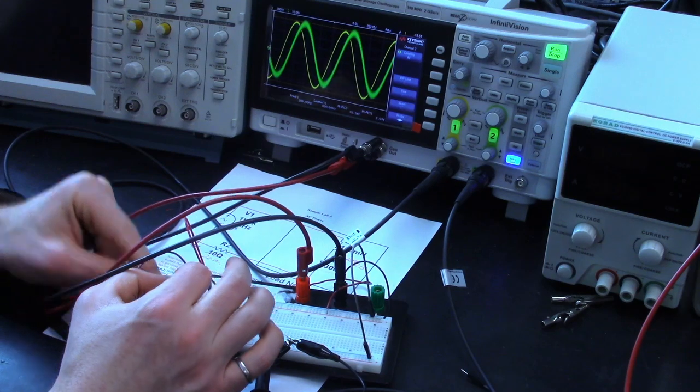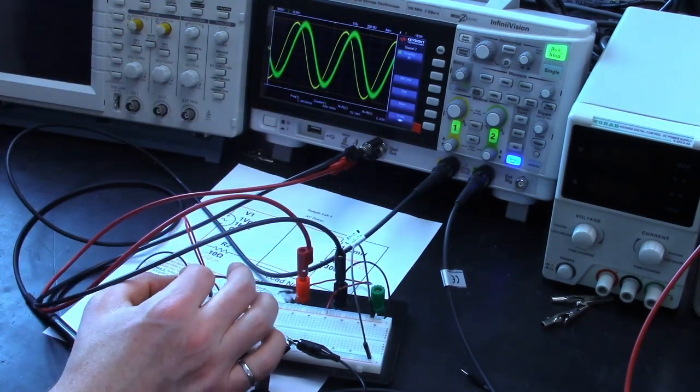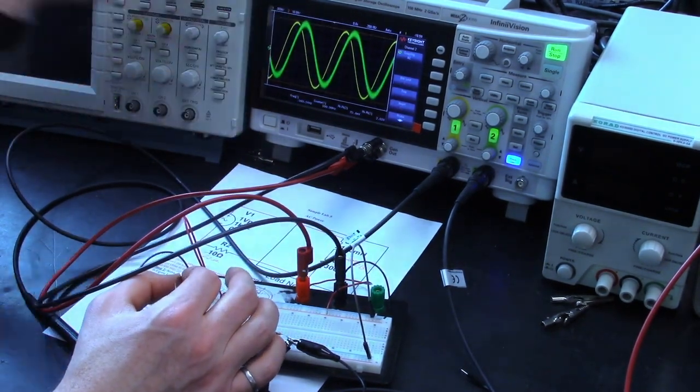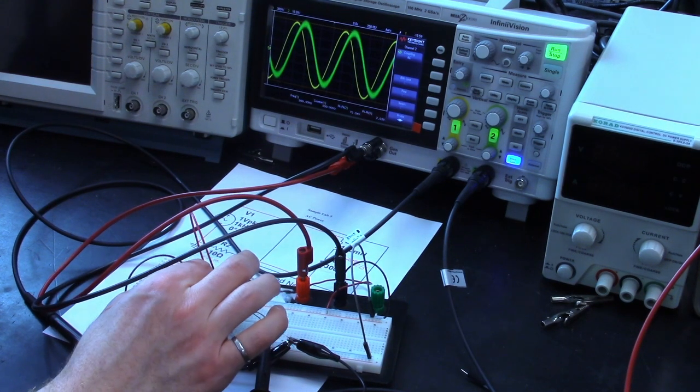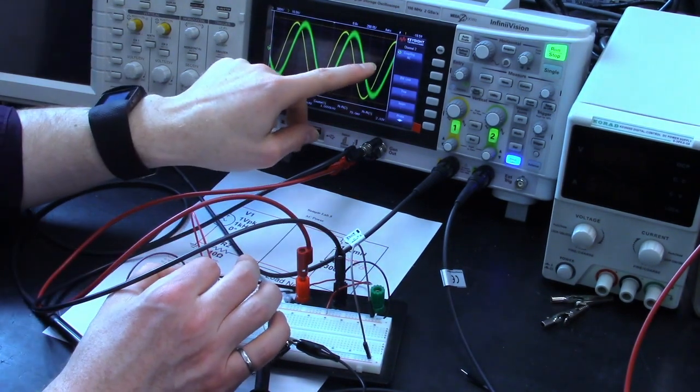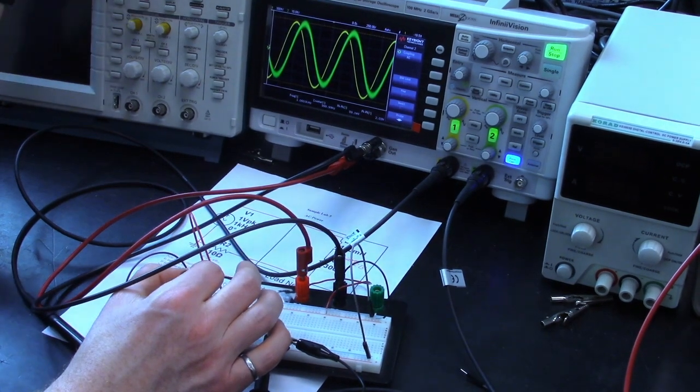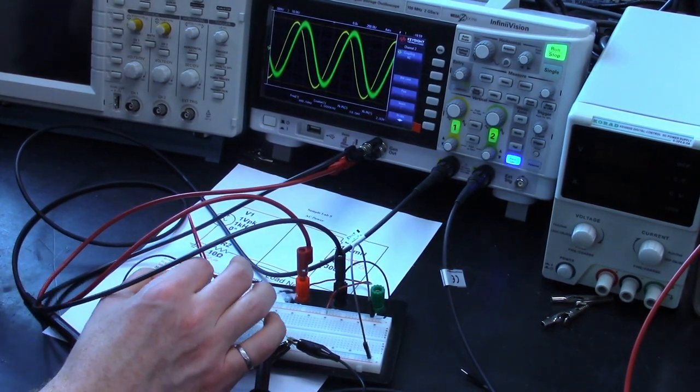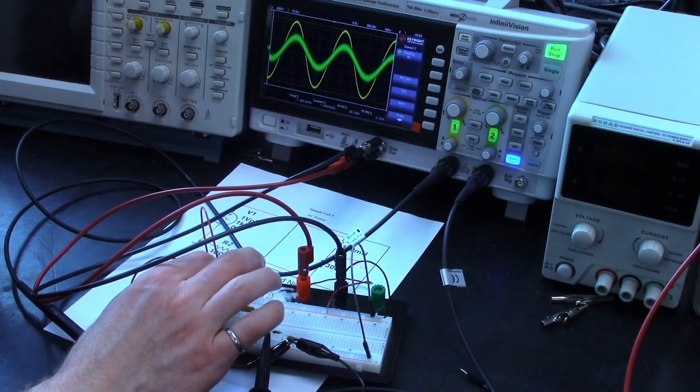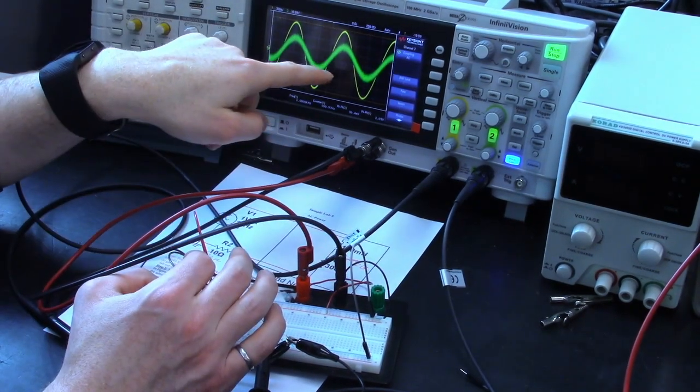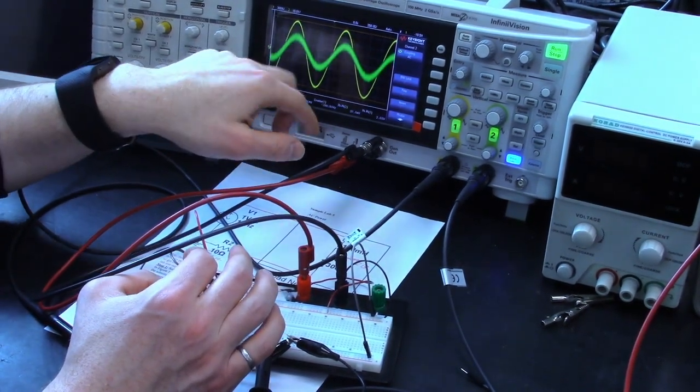So now if we look at the scope we see that we have our current that's phase shifted and higher amplitude. And if we hook up these capacitors what we should see is that the current phase shifts to line up with the voltage and reduces an amplitude. And there we go, so we've shifted over to the left. Now they're more or less in phase and the amplitude has reduced.